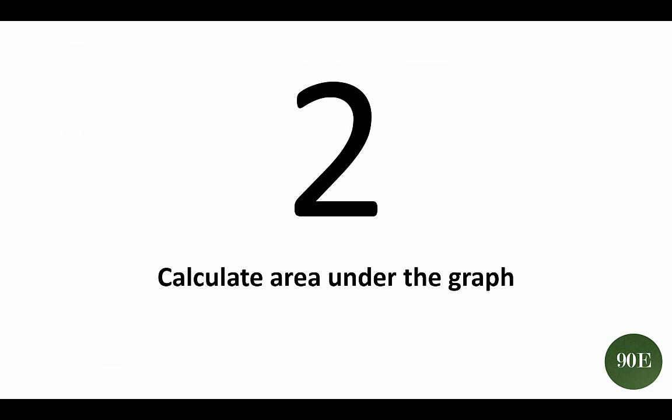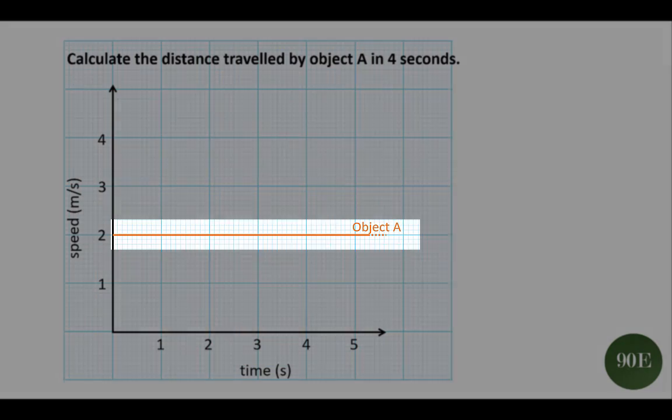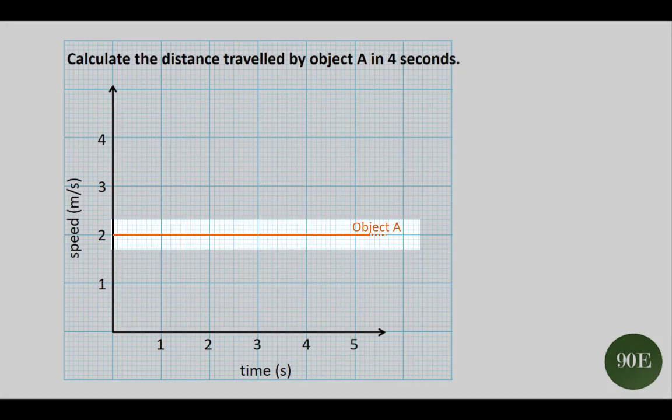The second method is to calculate the area under the portion of the journey line, that's this line, that you're interested in. In this example, it's the area within 4 seconds.